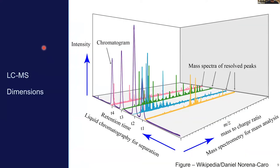To reiterate from this morning: our data has dimensionality. When we have a separation, we've got a liquid chromatography domain — a time domain for our retention time — and we also have a mass spectrometry domain. At each time point in our separation, we acquire a mass spectrum that represents all of the features that are there. This is a visualization of LC-MS data.